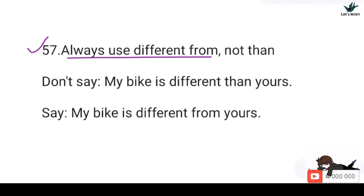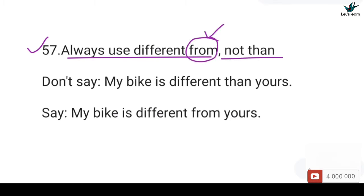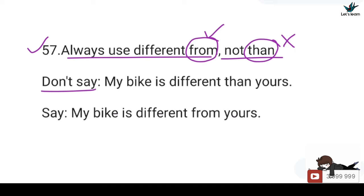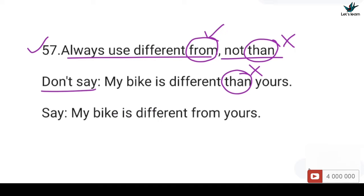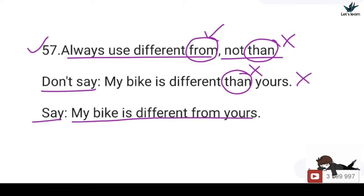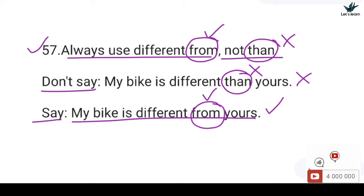57. Always use 'different from', not 'than'. You should not say: My bike is different than yours — 'than' after 'different' is incorrect. You should say: My bike is different from yours — 'from' after 'different' is the correct preposition.